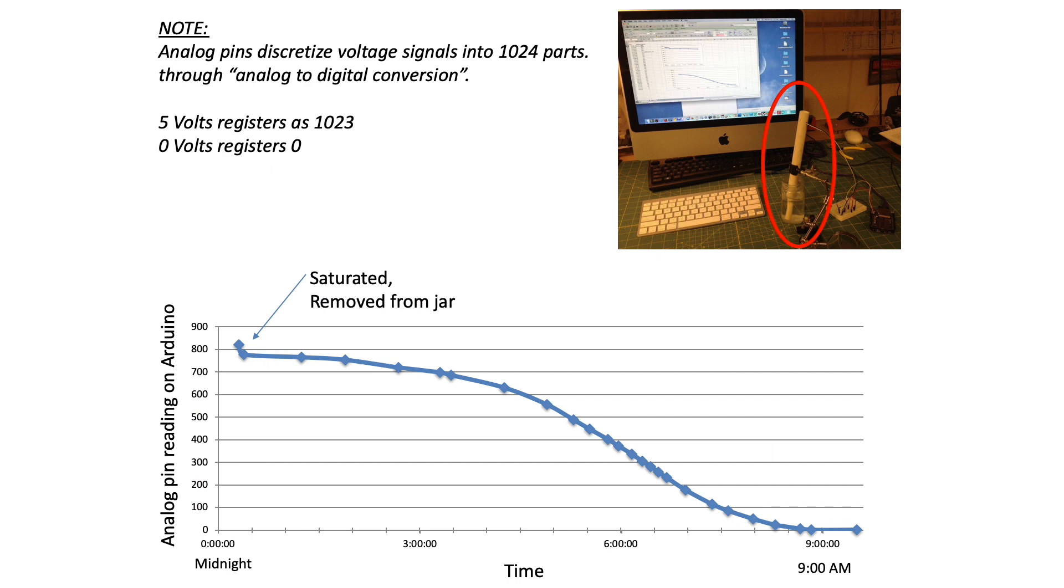As proof of concept, this shows the analog response on an Arduino resulting from a saturated gypsum block being removed from a jar with water and then allowed to slowly dry over time. Either through experimental or subjective determinations, you could write algorithms that look at the slope of this curve to determine thresholds for when the block is determined to be wet or dry. This is only possible with analog sensors.